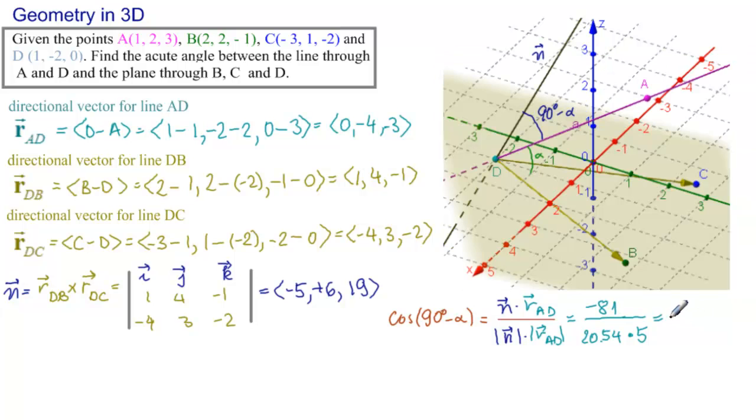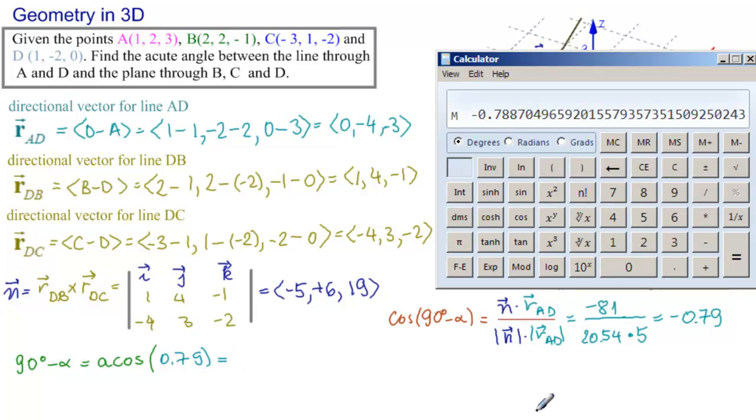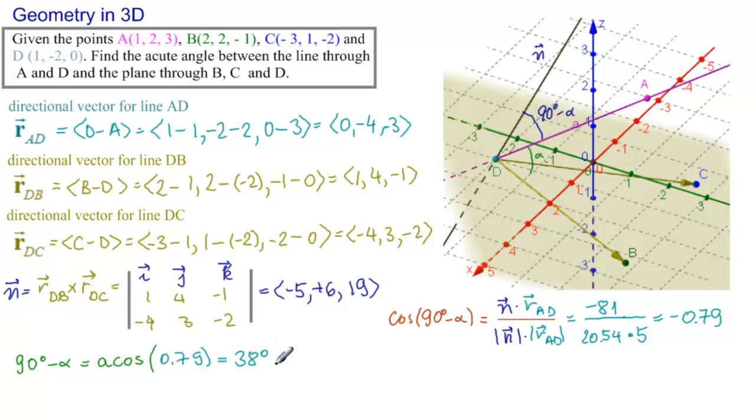-0.79 is cosine of 90 degrees minus alpha, except that this is negative, and we have already discussed this. These are always acute angles. So 90 degrees minus alpha will be arccosine of the positive value. We'll make a point of that: 0.79. Take the inverse cosine, so 38 degrees. Which means that alpha equals 90 degrees minus 38 degrees equals 52 degrees. And that is our answer.